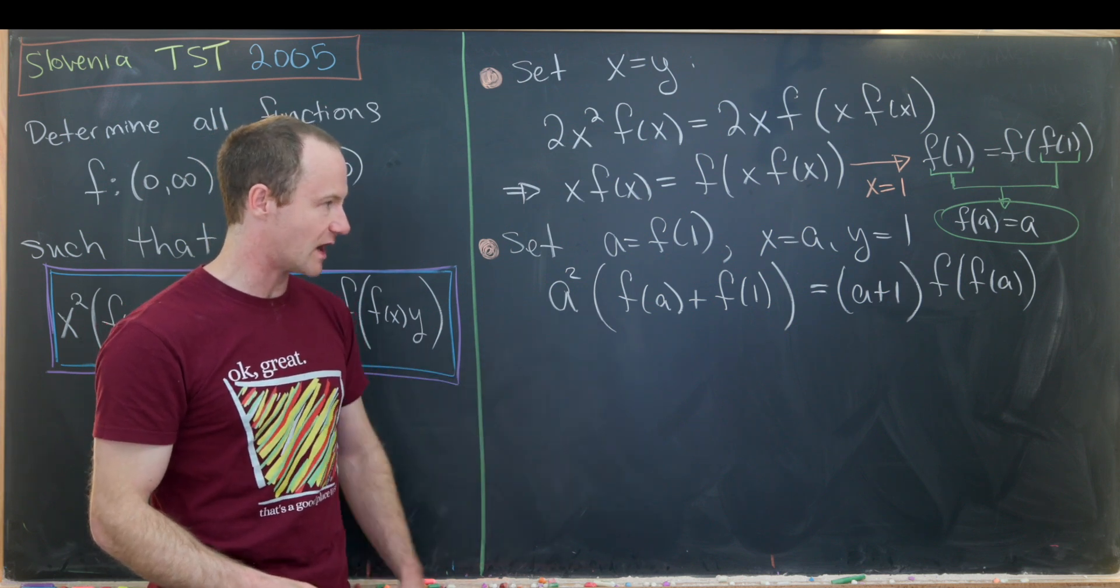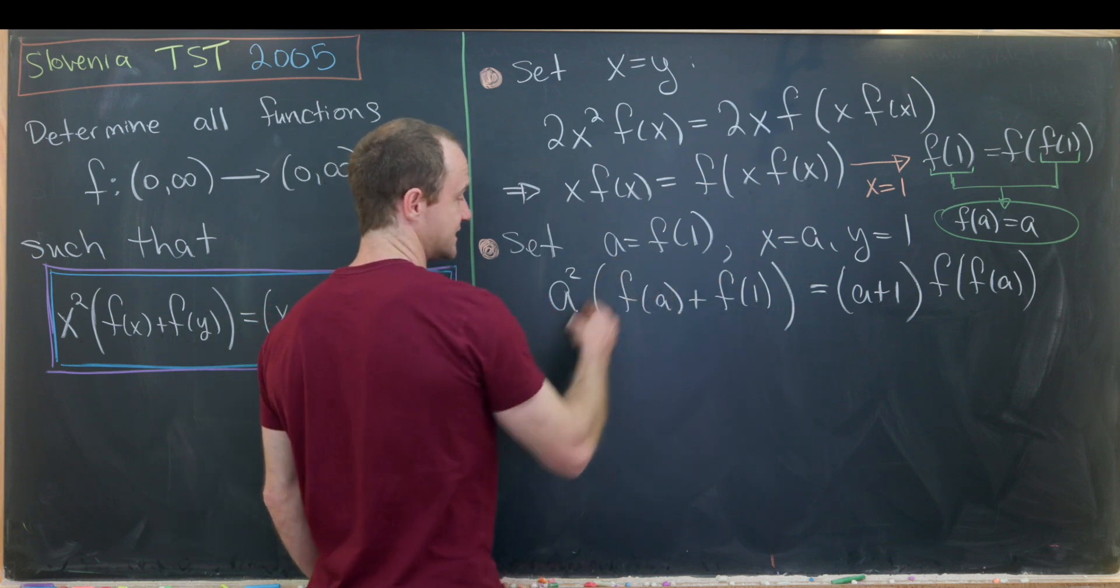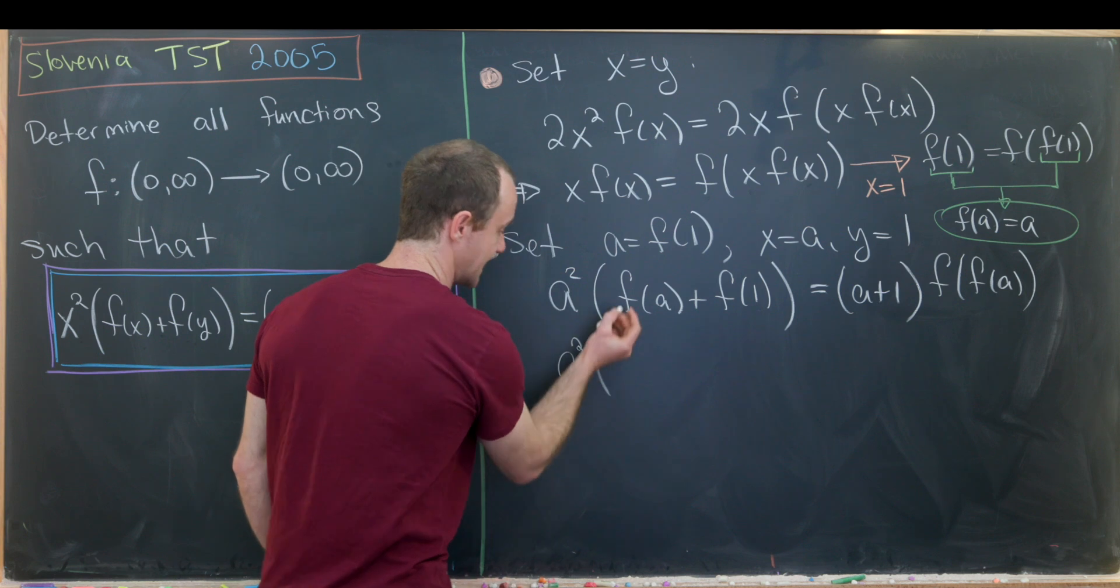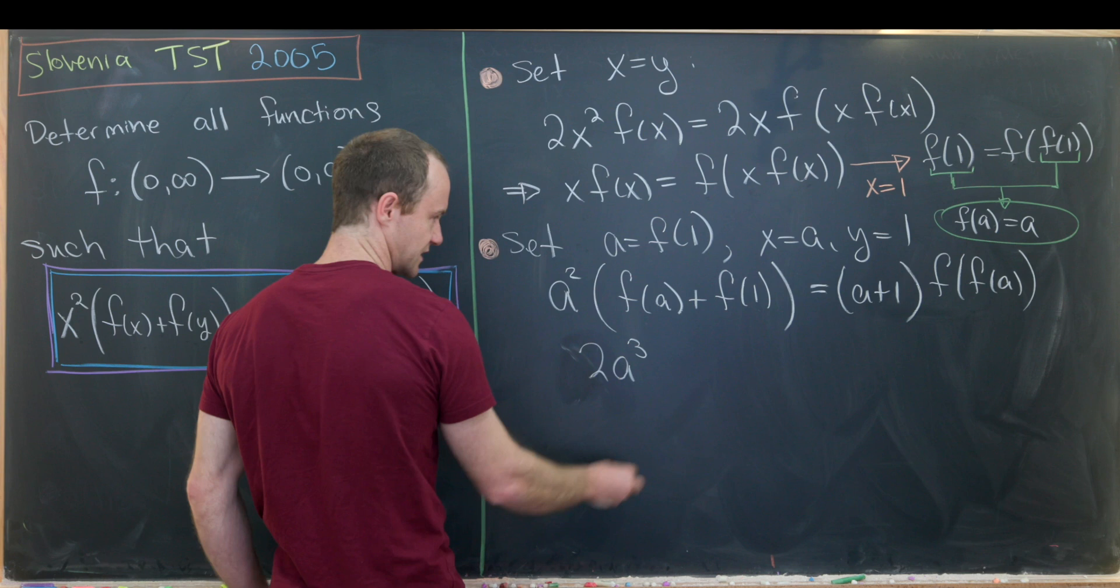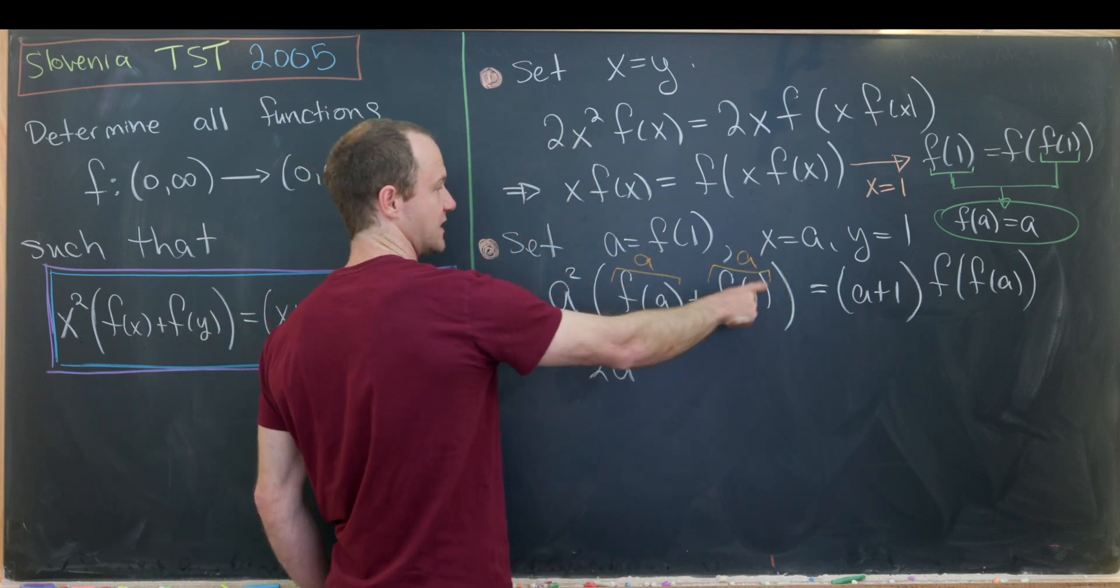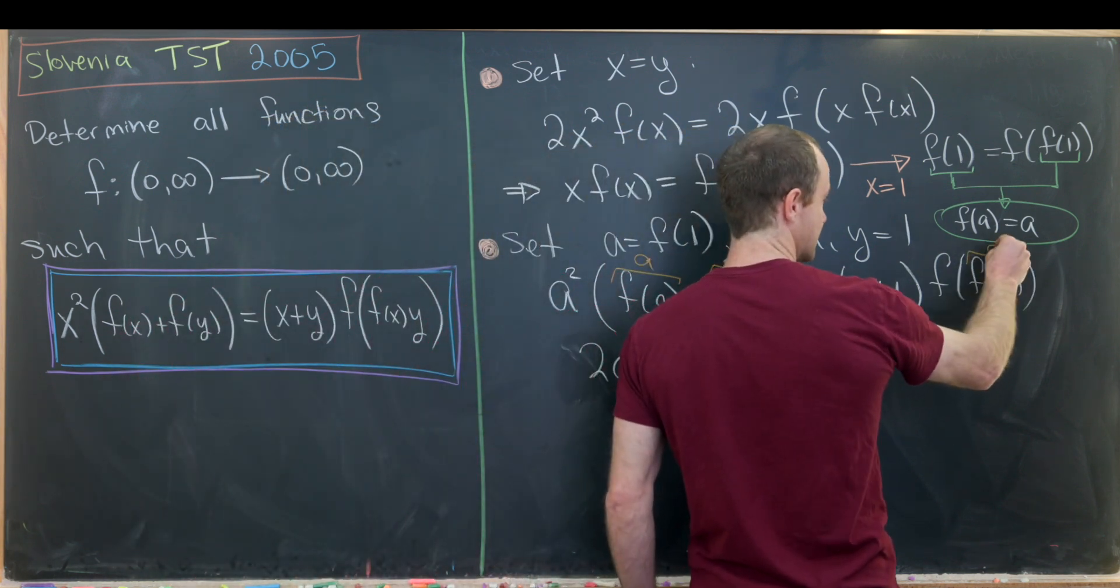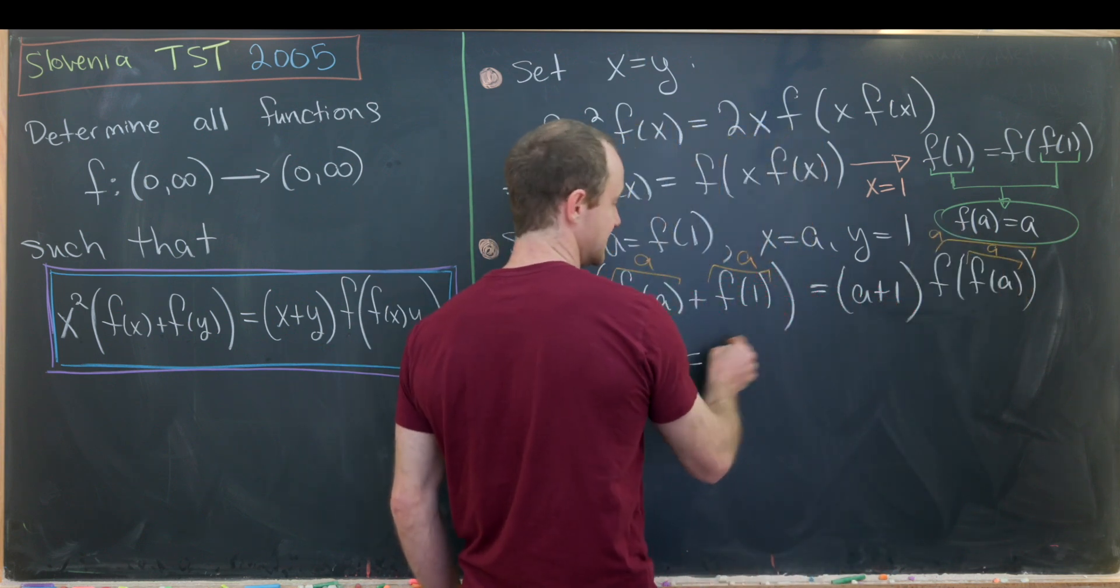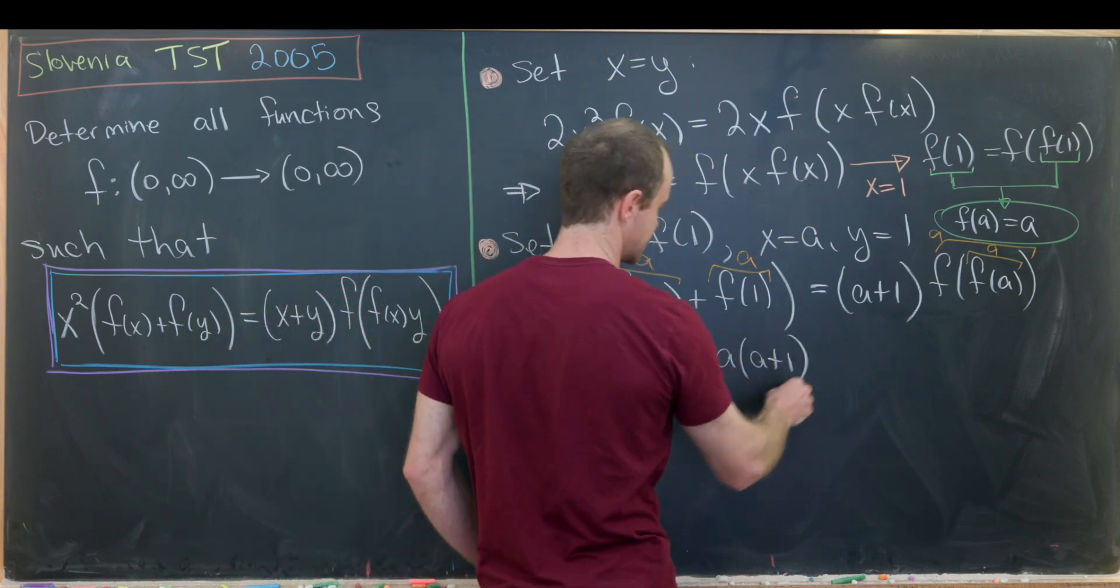So that means we can make quite a bit of simplification here. We can replace this f(a) with a, and then f(1) is also a. So that gives us a². And then a + a, so that's 2a. So that really turns this whole thing into 2a³. This is equal to a because it's a fixed point. This is because of our definition. Then this inner f(a) is equal to a, and then we evaluate it again and we get a one more time. So that means this right-hand side is equal to a times (a+1).